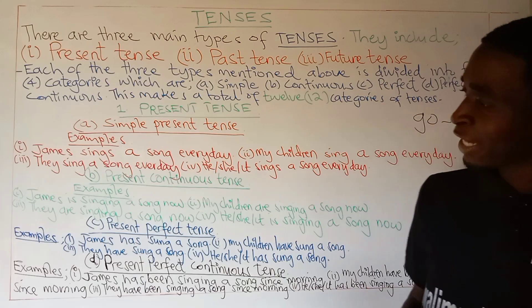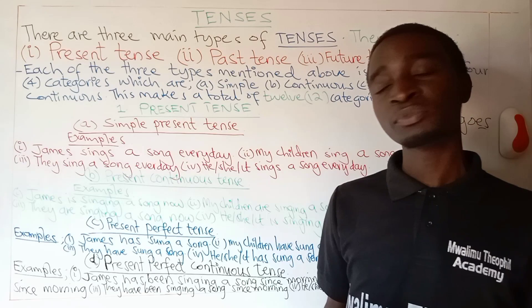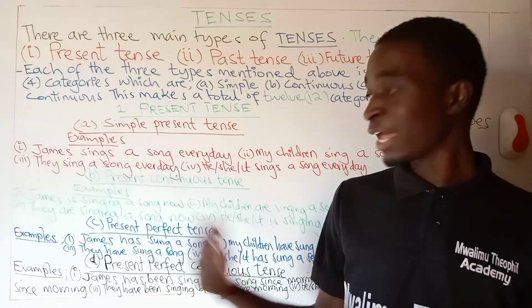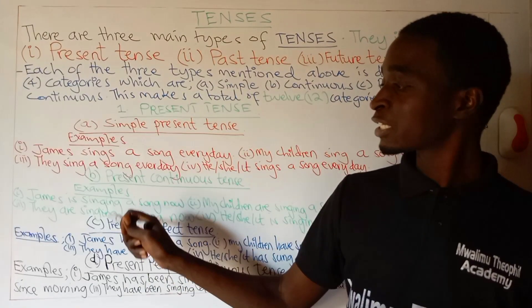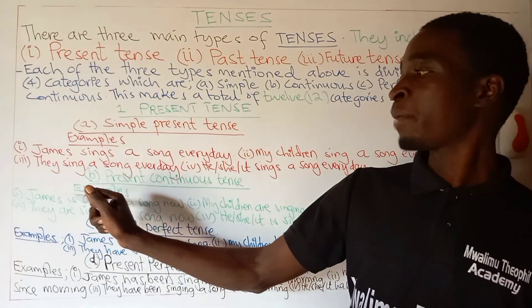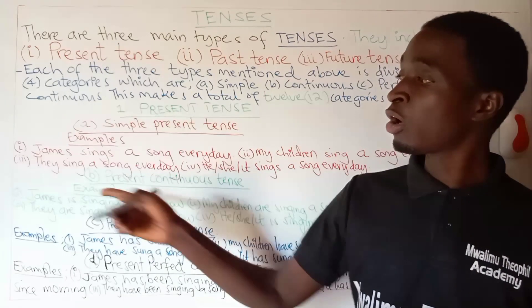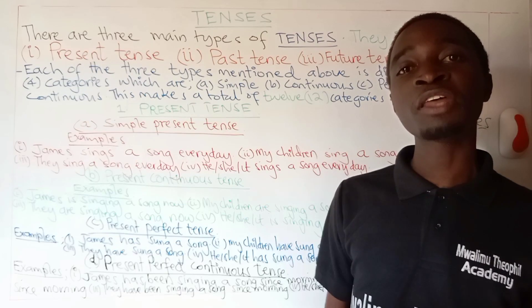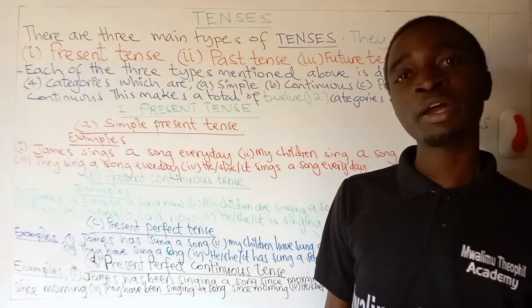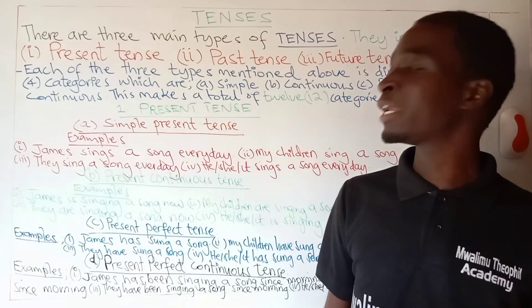From these four sentences, you may find that in each sentence we have the helping verb is or are. After the helping verb, we should add the main verb which ends with -ing, as you see: singing in each of the sentences. The helping verb is is used when a pronoun is in singular or when we are dealing with the name of a single individual. And are is used when we are dealing with pronouns which are in plural, or nouns which are in plural.